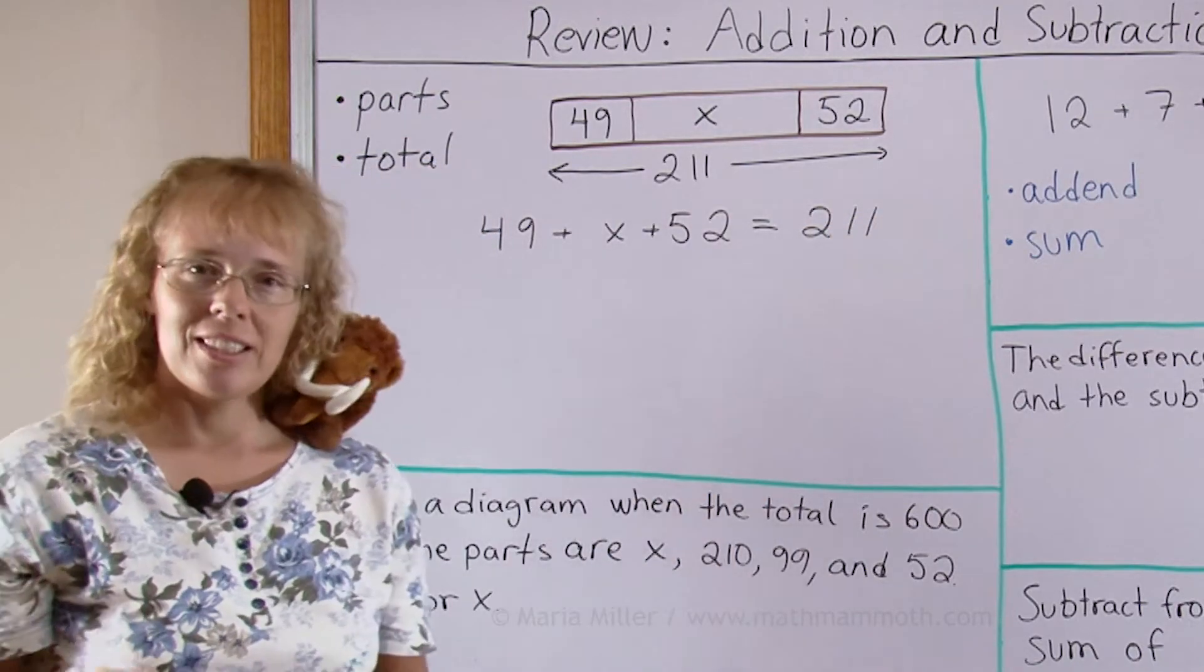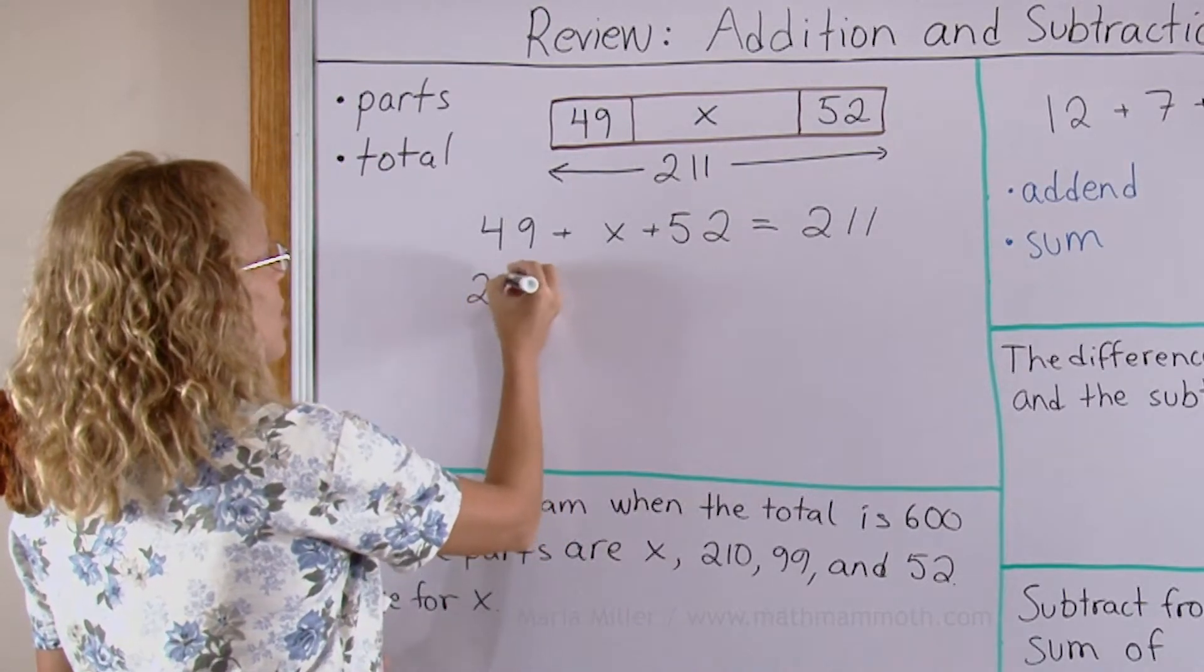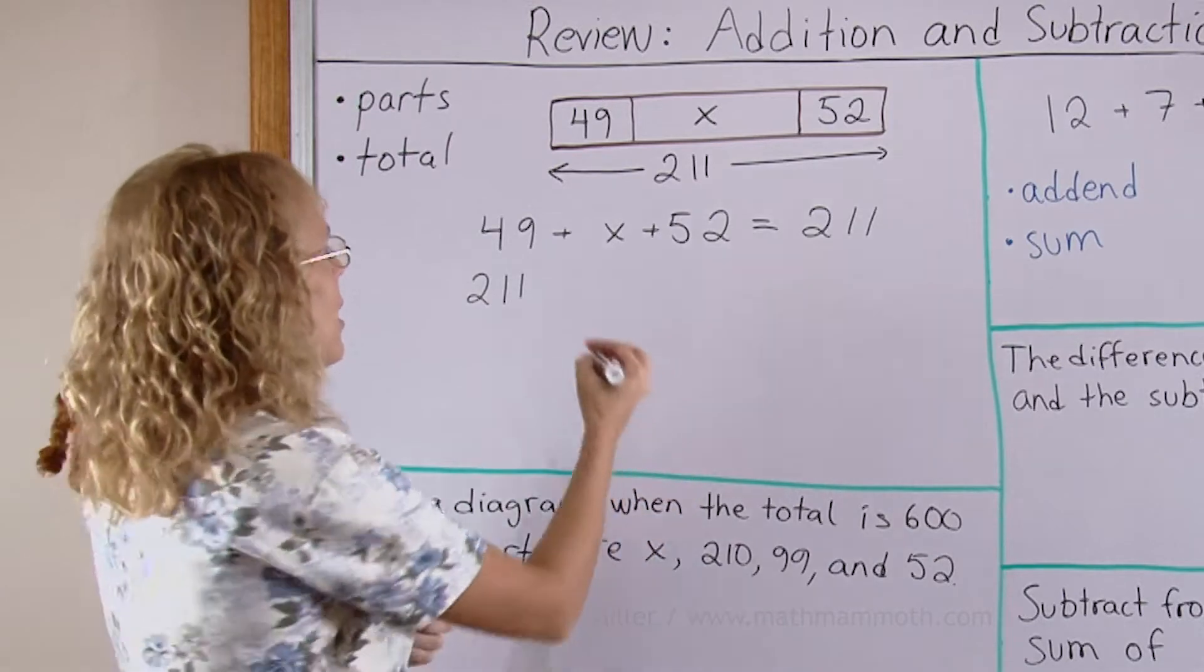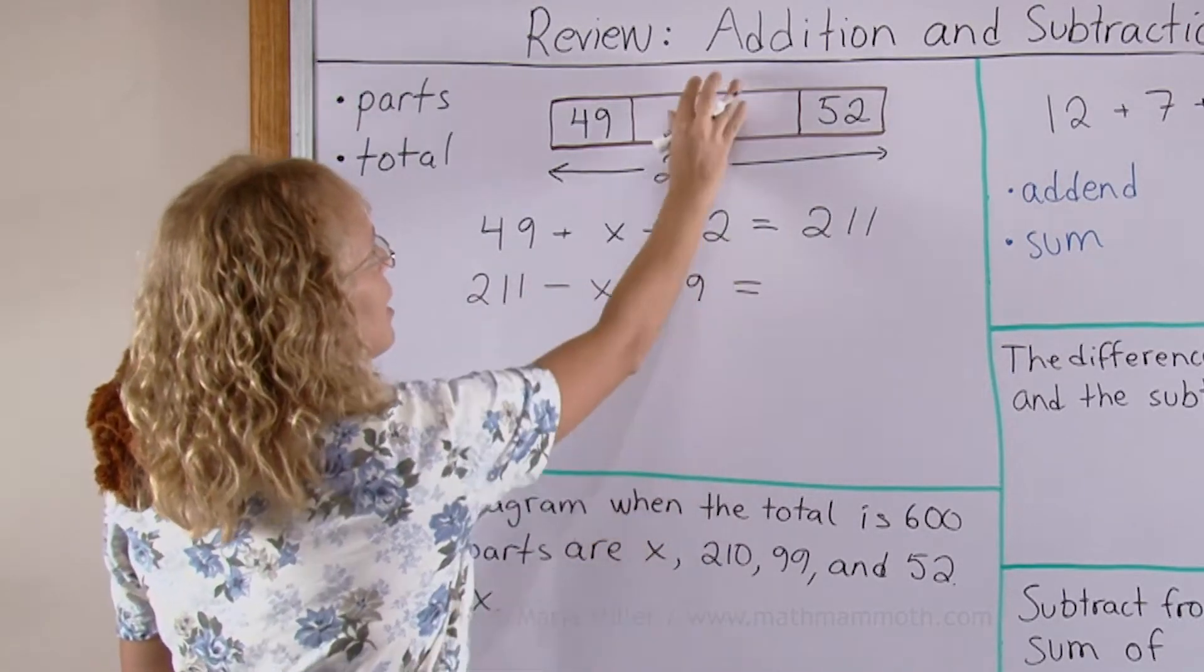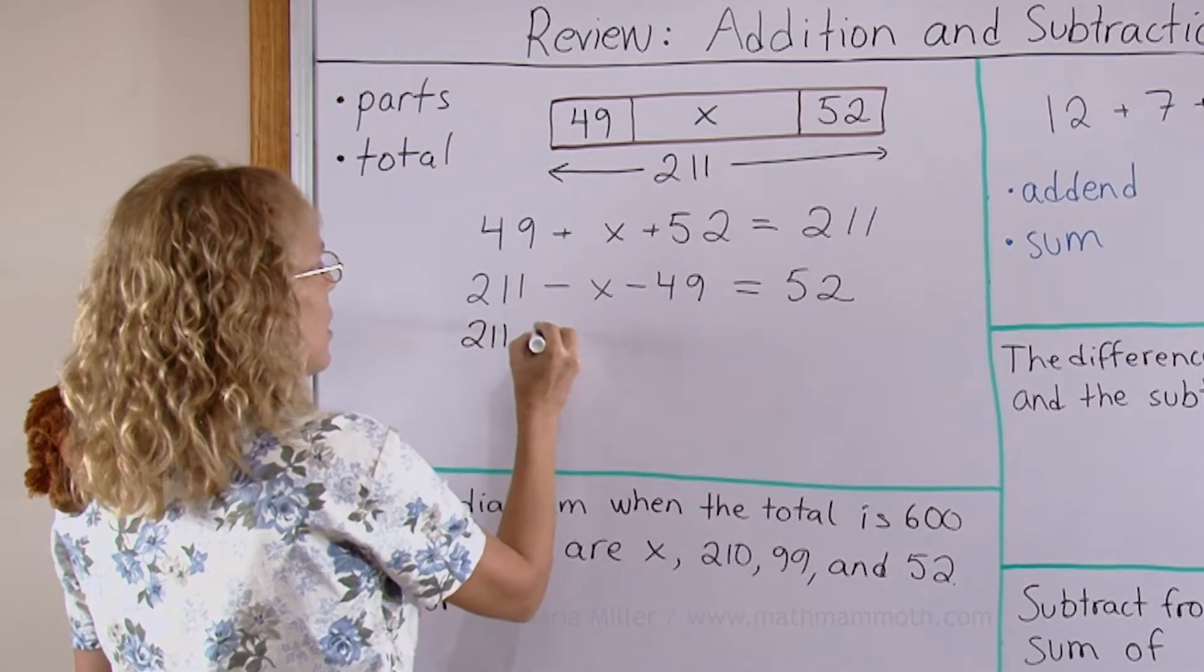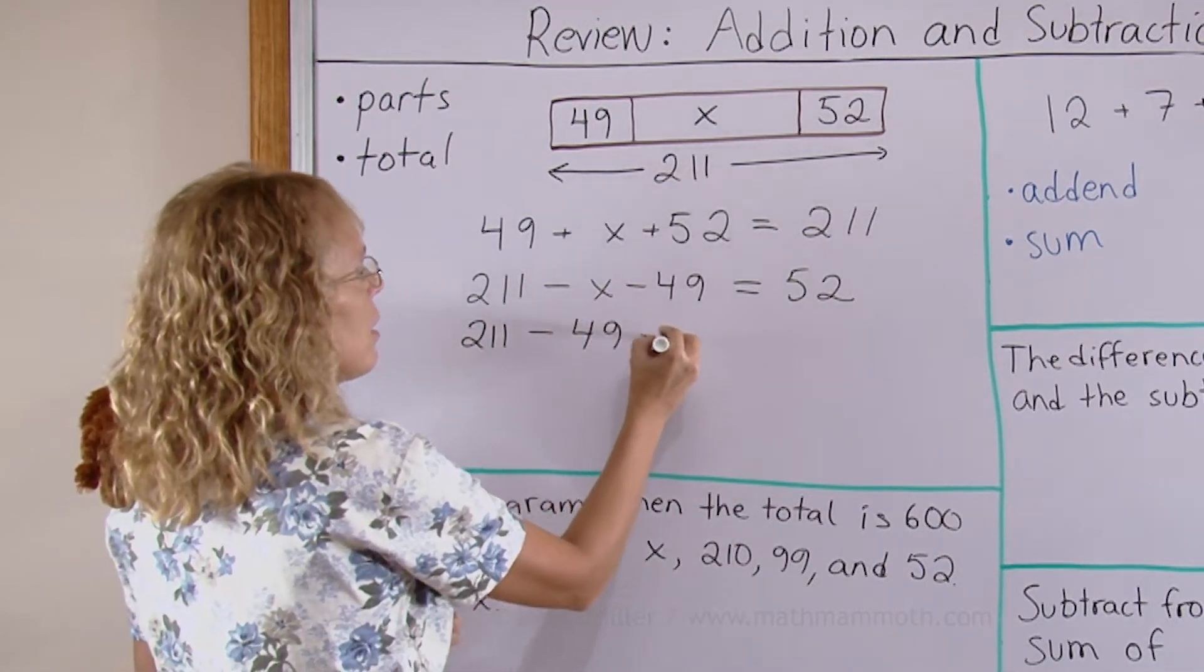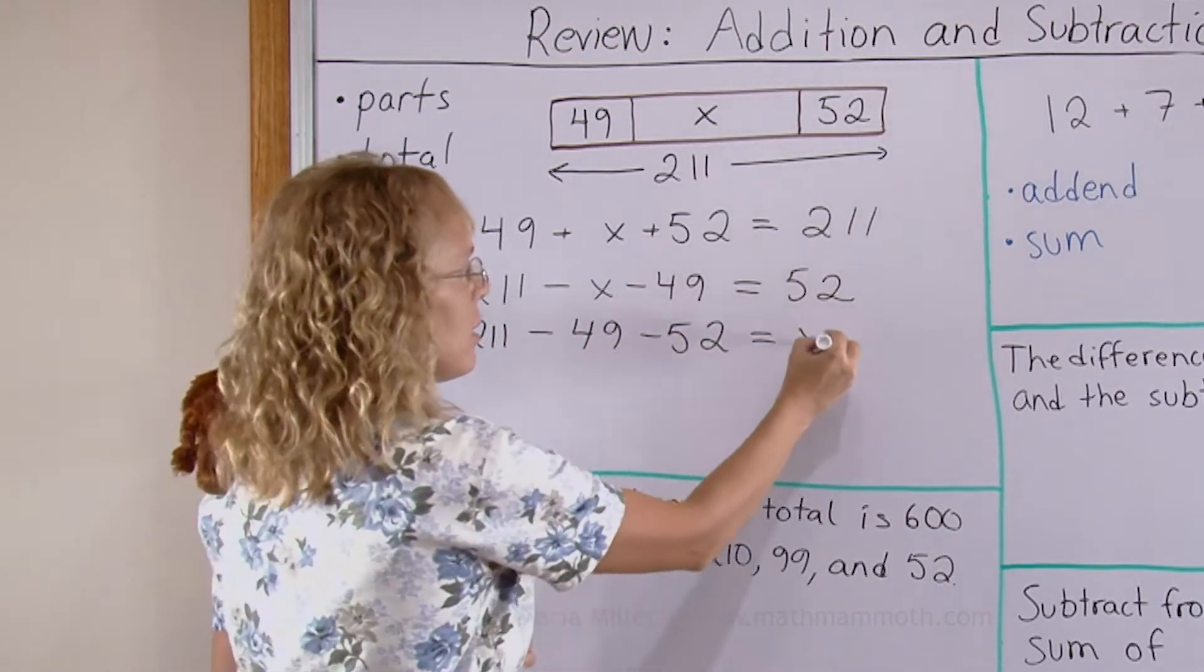Then I can also write several different subtractions from this. I start the subtractions always with the total. From the total I take away some of the parts. For example, I take away x and 49. If I take away x and 49 parts then what is left is the 52. Or I can take away from the total 49 and 52 and then that would leave me the part that is x, the unknown.